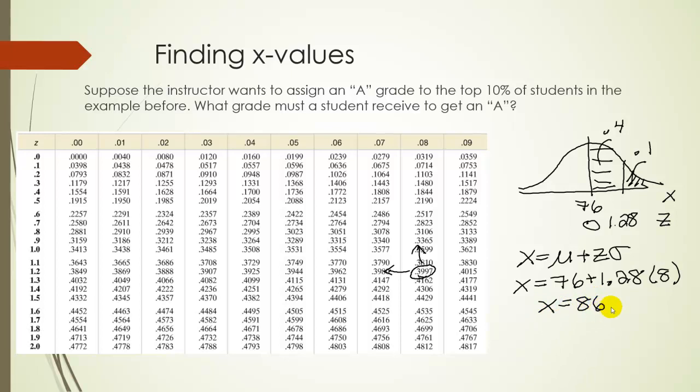So any student that receives above an 86.24 will receive an A. So maybe approximately 86 if the instructor is feeling a little generous, or 87 if they're feeling a little stingy. So they need at least an 86 in order to get an A. And that's our answer.